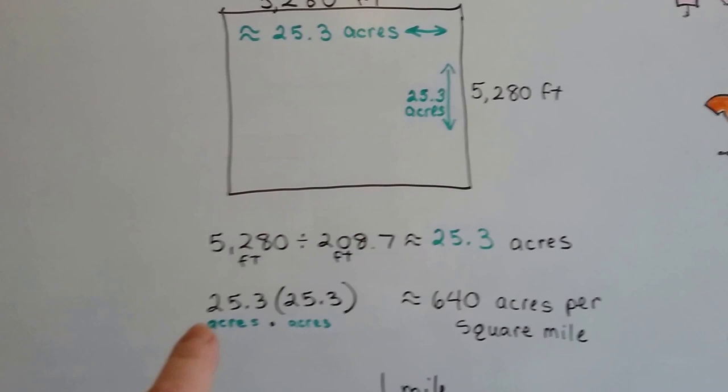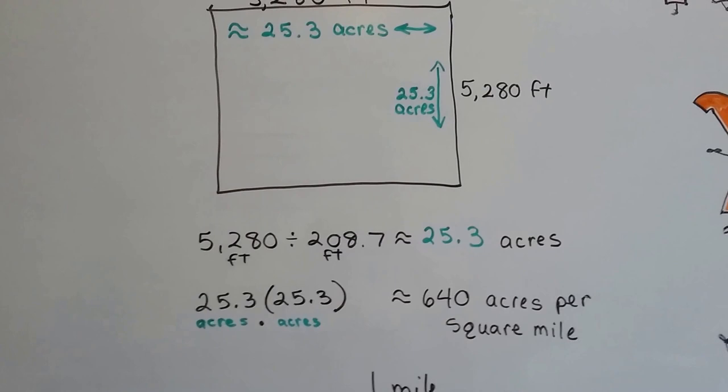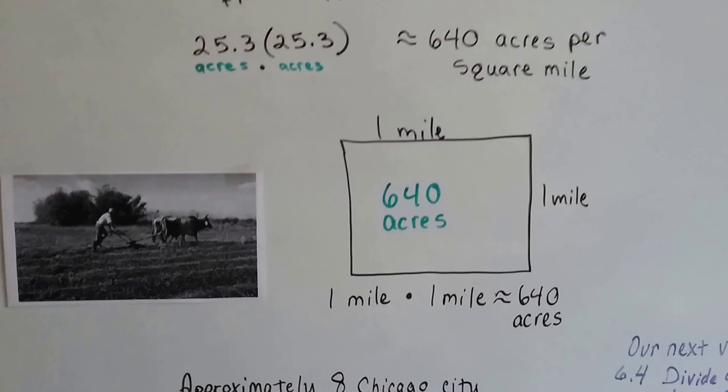If we do the 25.3 acres times 25.3 acres, we get approximately 640 acres per square mile.